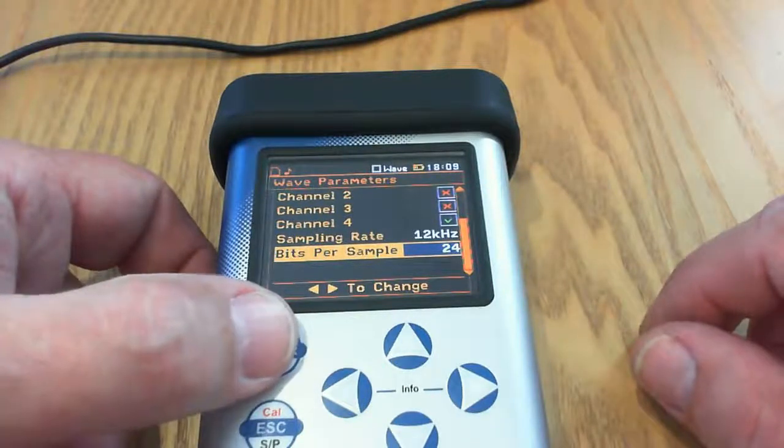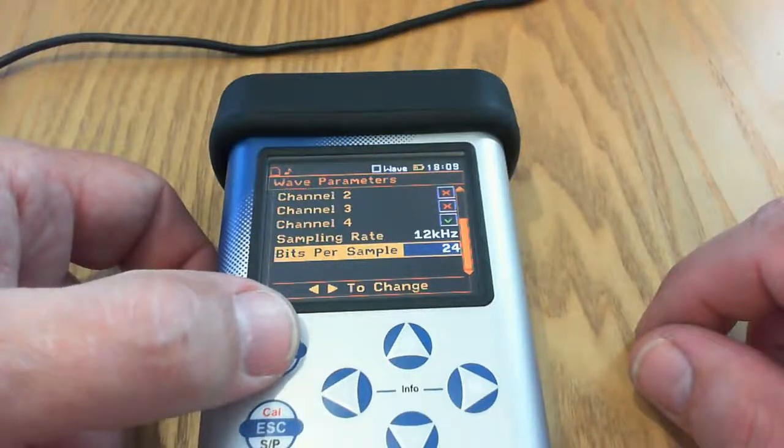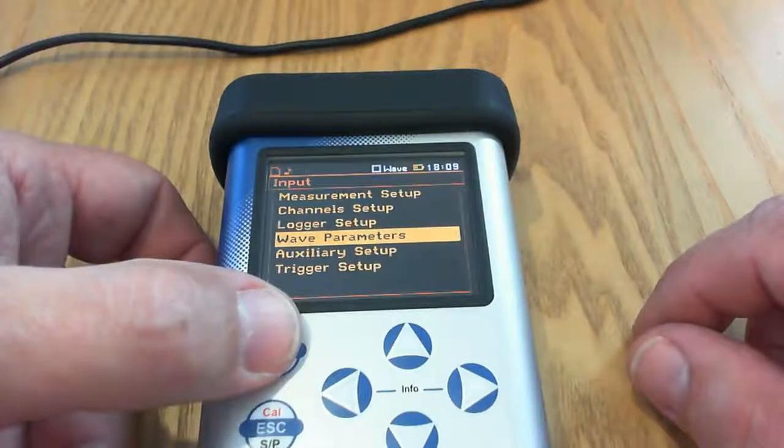You can see I've only enabled audio recording in channel 4. I'm not interested in recording anything in channels 1, 2 and 3. So that's all set up.